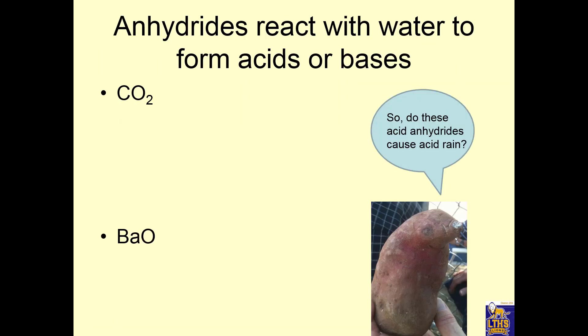Anhydrides react with water to make acids or bases. This is a nonmetal, nonmetal oxide. So, before we even write the reaction, we should be thinking acid anhydride. Now, let's see why. We put carbon dioxide into water and we get H2CO3. This is acid. So, nonmetal oxide, acid anhydride plus water gives acid.